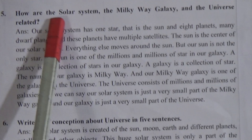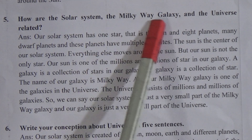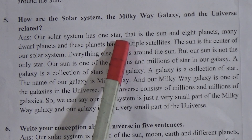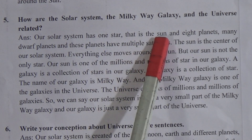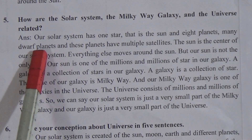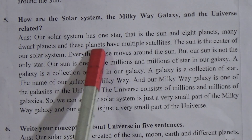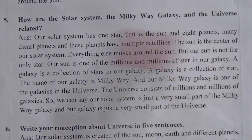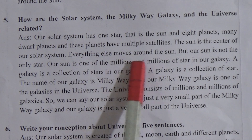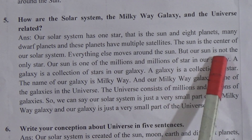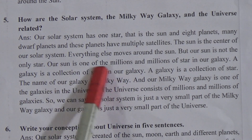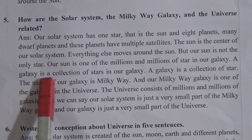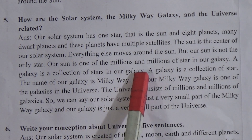Come to question number 5: how are the solar system, the Milky Way galaxy, and the universe related? The answer is: our solar system has one star — the sun — and eight planets, many dwarf planets, and these planets have multiple satellites. The sun is the center of our solar system. Everything else moves around the sun. But our sun is not the only star; our sun is one of the millions and millions of stars in our galaxy.